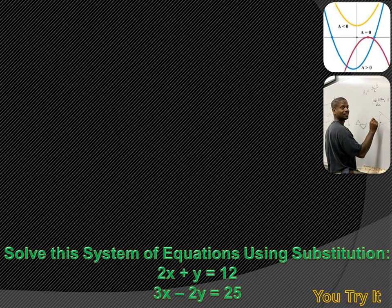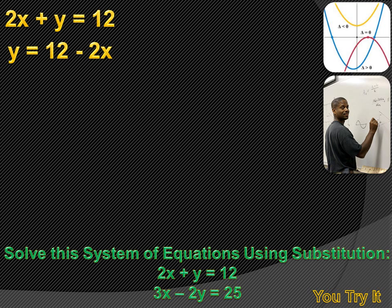We're asked to solve this system of equations using substitution. Using substitution means we're going to solve one of the equations for one of the variables, and then substitute that solution into the other equation. You'll want to look at the two equations and figure out which is easier to solve for a variable. I can see a positive Y, while all other variables have multiples of two or three, meaning I'd have to divide. So I'm going to use 2X plus Y equals 12, solve that for Y by subtracting 2X from both sides, and get Y equals 12 minus 2X.